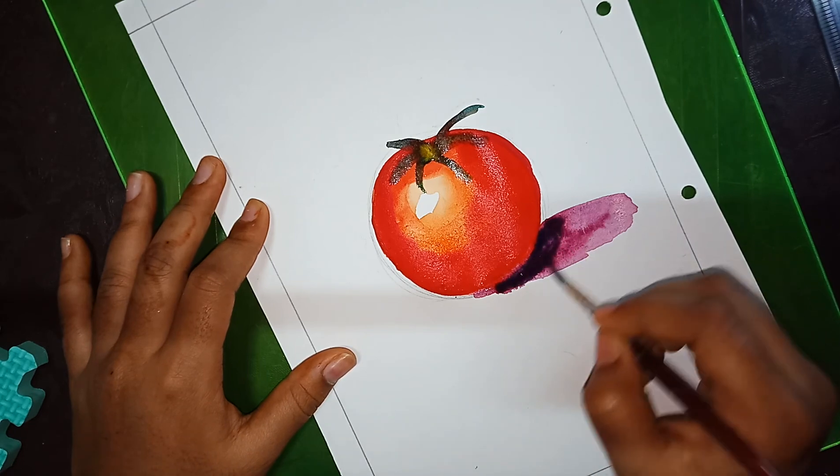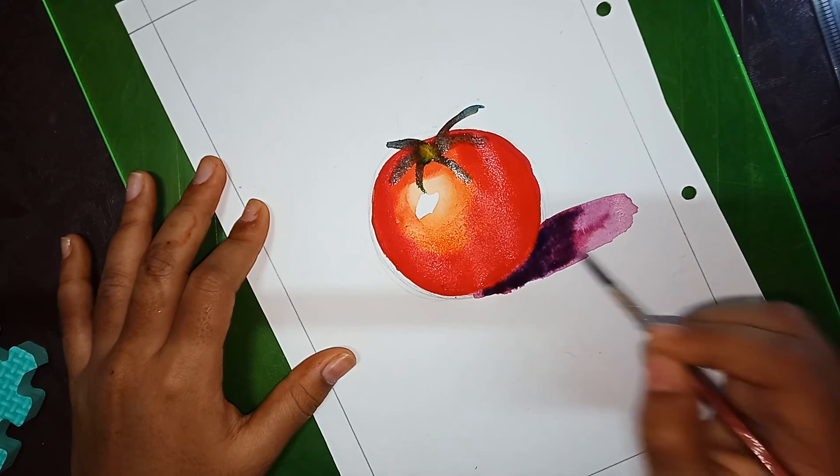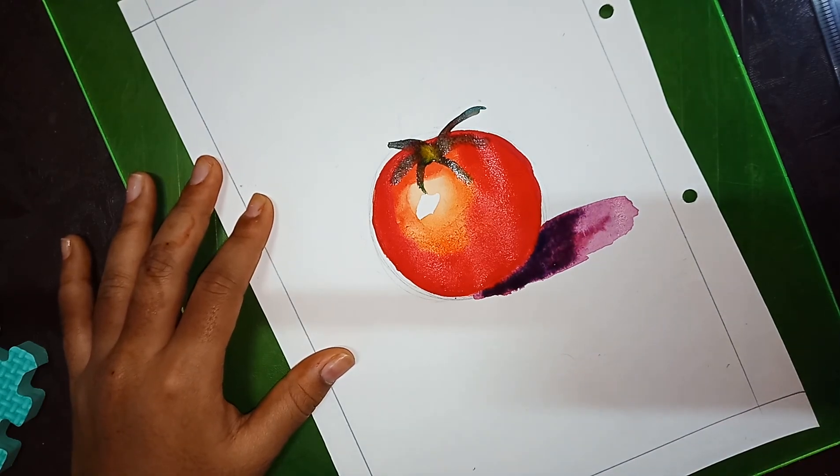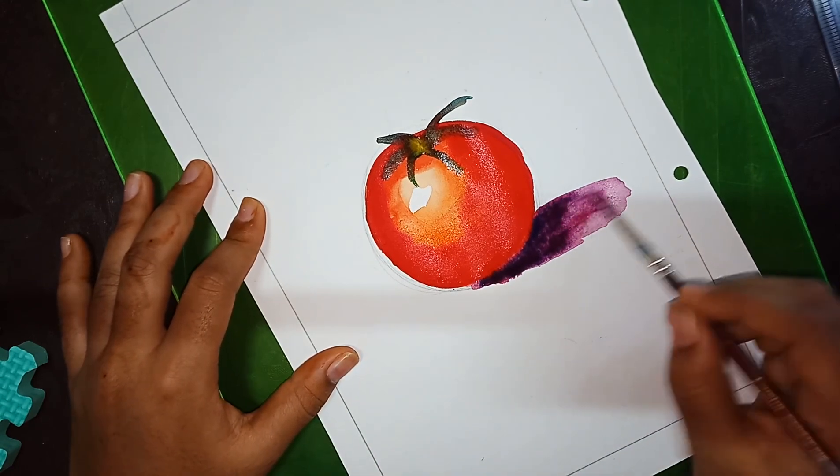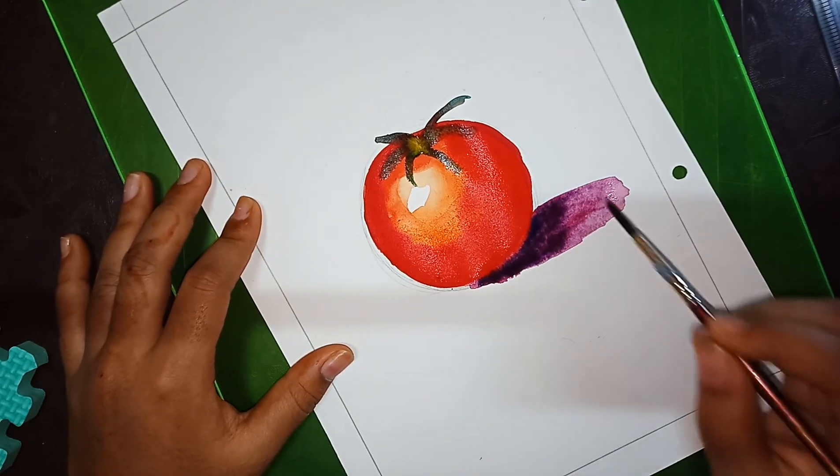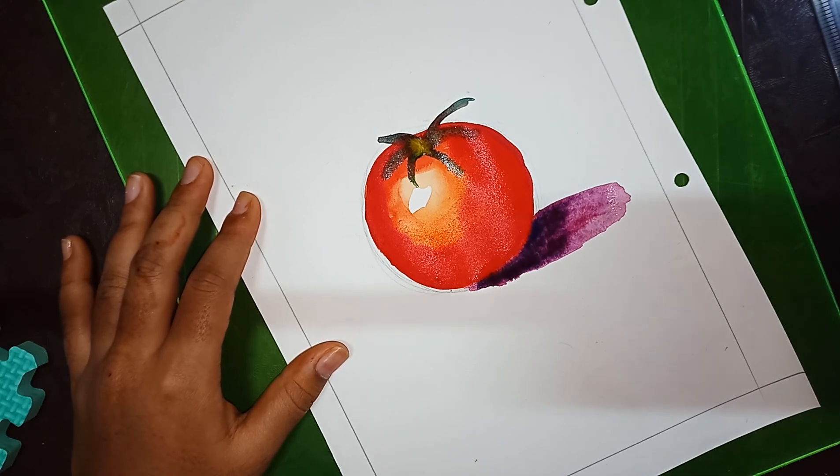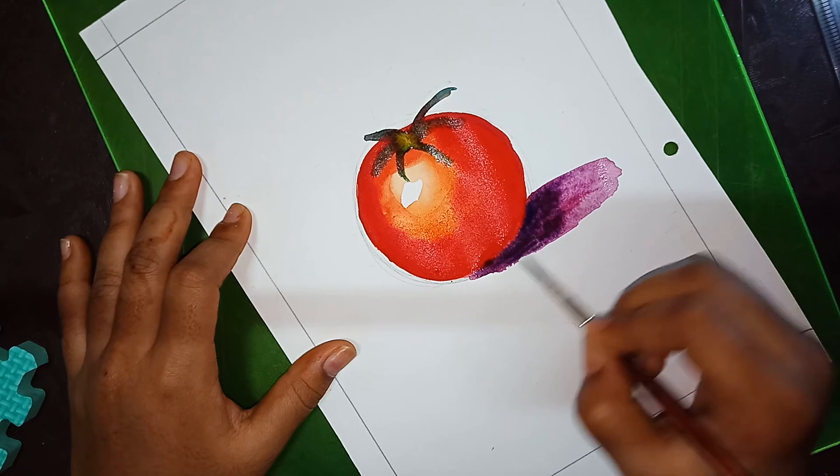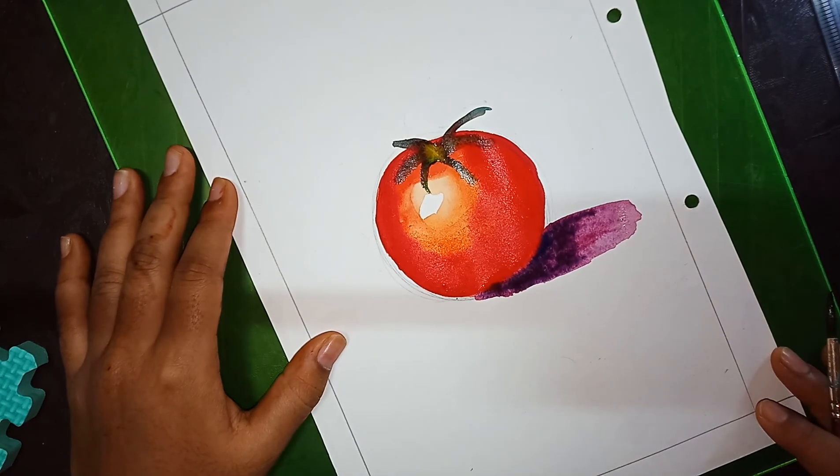Now again, once the shadow part dries, we need to add more color. Shadow is not compulsory because drapery comes for that. In tomorrow's video, we are going to club three objects—that is ball, bucket, coconut, and tomato—with the drapery.